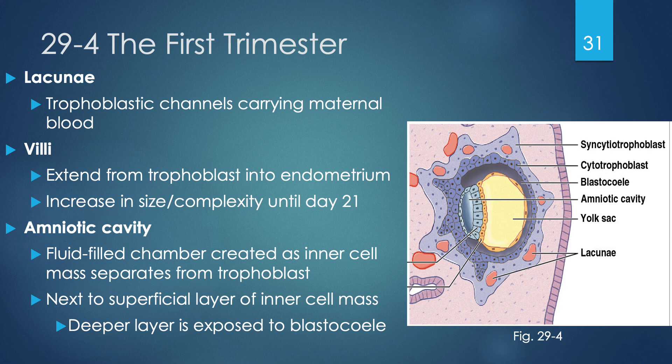Trophoblastic channels that carry maternal blood are called lacunae, and villi also form, extending from the trophoblast into the endometrium. These continue to grow in size, number, and complexity up until about day 21. The amniotic cavity holds amniotic fluid — a fluid-filled chamber created as the inner cell mass starts breaking free from the trophoblast. The deeper layer of the inner cell mass is exposed to the blastocele.